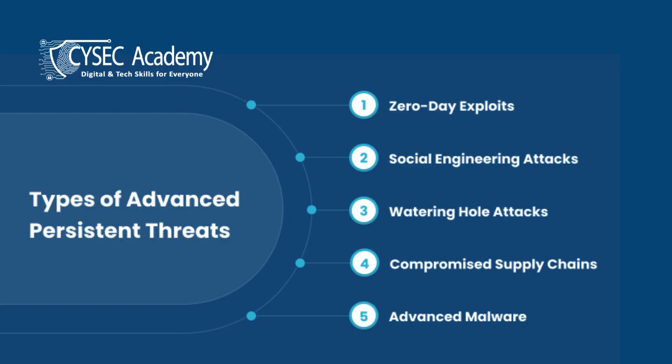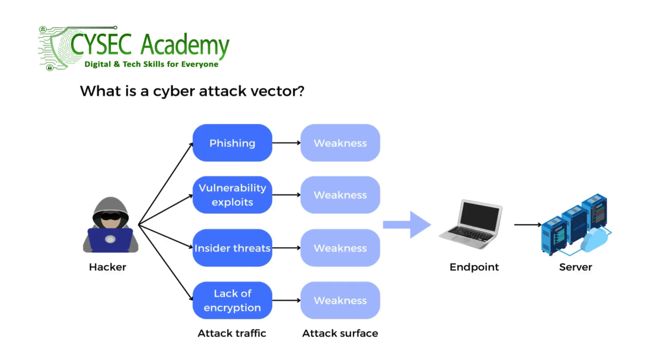Types of Advanced Persistent Threats include: one, zero-day exploits; two, social engineering attacks; three, watering hole attacks; four, compromised supply chains; and five, advanced malware. It is important to take note of these listed forms of APTs in a SOC context.